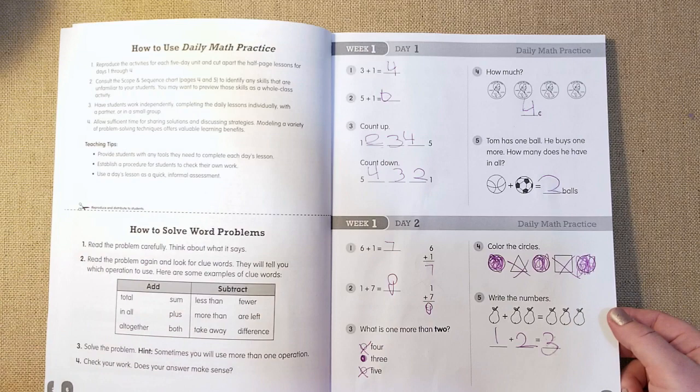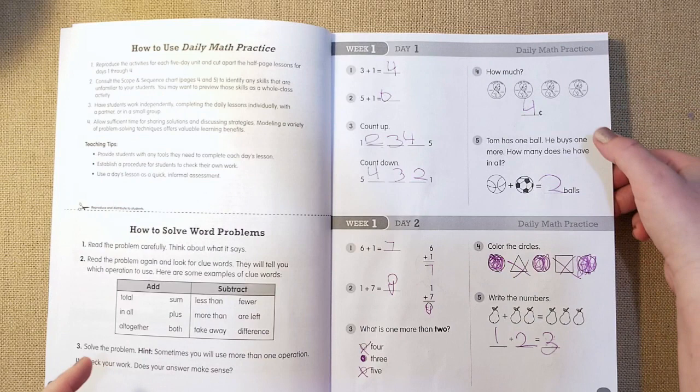So you can see day one, it's five questions, three plus one, five plus one, it's going horizontal. And then they have counts up to this number. They're looking at pennies.